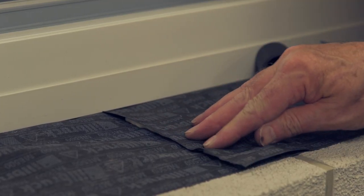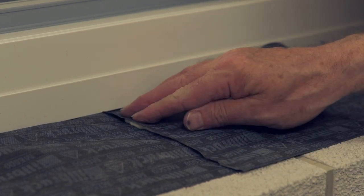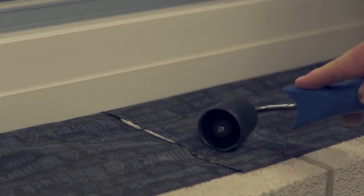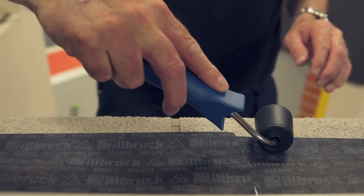Seal the overlap with SP525 and use a roller to consolidate the bond. The ME500 is now fully bonded to the reveal.